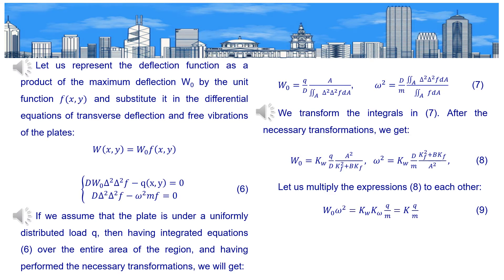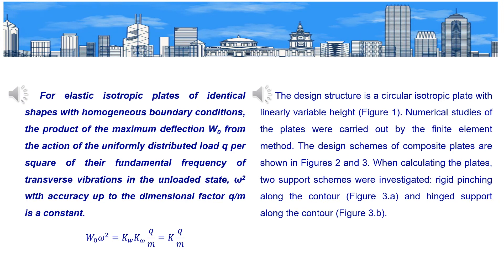Let us multiply the expressions shown in Formula 8 to each other to get Formula number 9. For elastic isotropic plates of identical shapes with homogeneous boundary conditions, the product of the maximum deflection W₀ from the action of uniformly distributed load Q per square of their fundamental frequency of transverse vibrations in the unloaded state ω² with accuracy up to the dimensional factor Q/M is a constant.